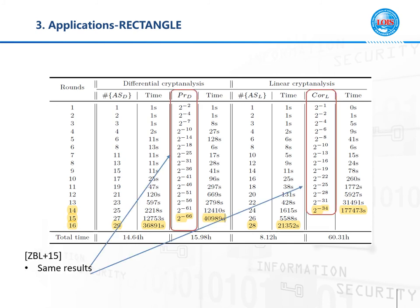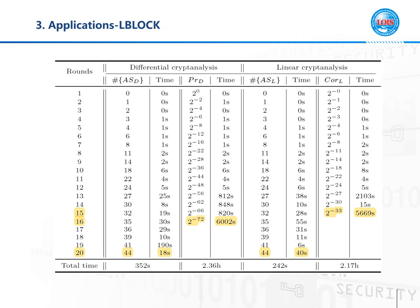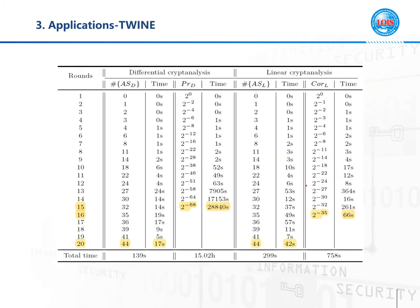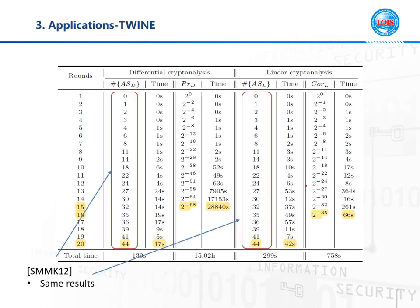Our results on the best differential and linear characteristics for RECTANGLE are the same as those given by the designers. L-Block and TWINE are two similar Feistel ciphers; both are word-oriented ciphers. For L-Block, we obtain results for up to 20, 16, 20, and 15 rounds respectively. For both L-Block and TWINE, our results on the minimum number of active S-boxes are the same as those given by the designers.